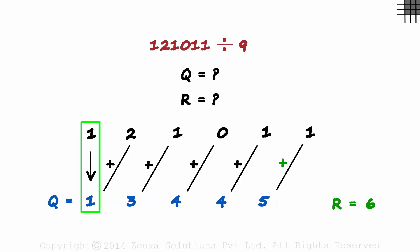We simply wrote the first digit as is, added it to the next digit, added the results to the respective next digits until we reach the last digit. The last sum becomes the remainder and the remaining number becomes the quotient.